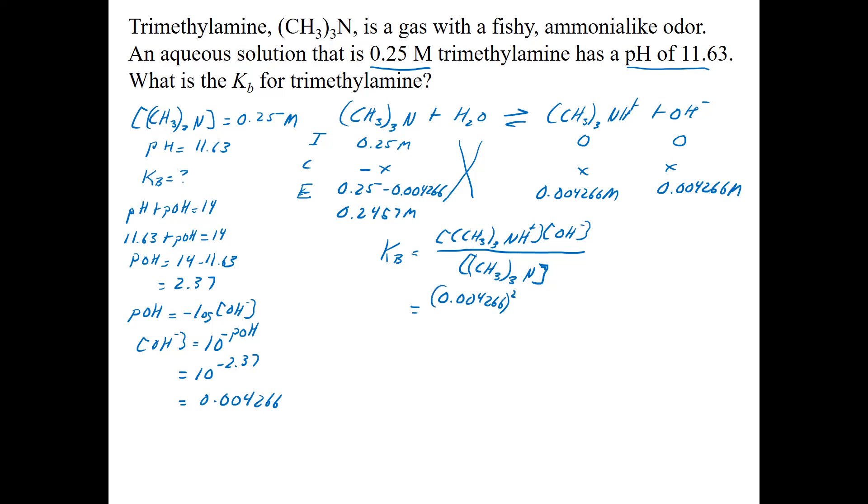This is going to be 0.004266 squared, because this times that, it's this times this, divided by the 0.2457. And when I do that, I get 0.000741 or 7.41 times 10 to the minus 5.